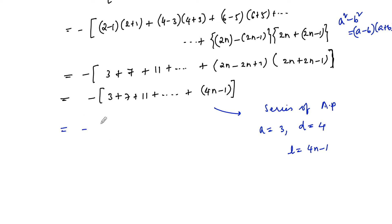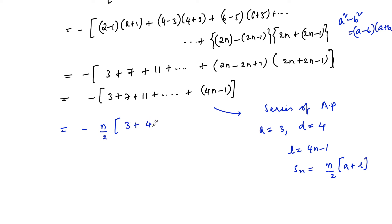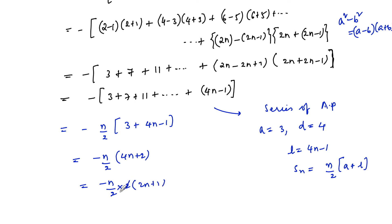The sum of n terms is n/2 × (first term + last term). So Sn = minus of n/2 × (3 + (4n - 1)) = minus of n/2 × (4n + 2) = minus of n/2 × 2(2n + 1) = -n(2n + 1).